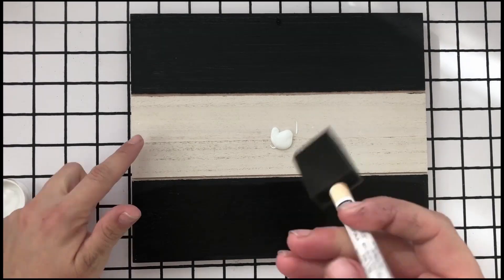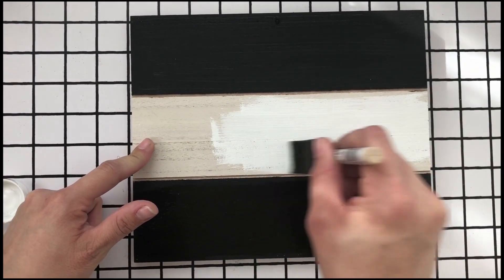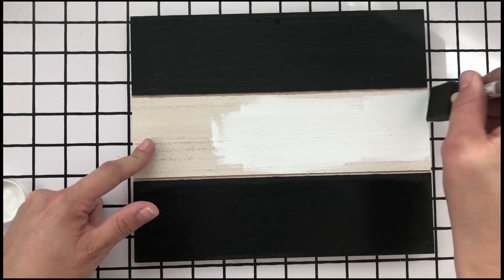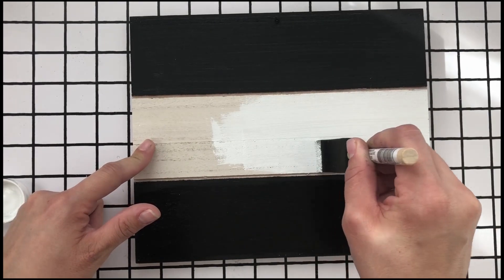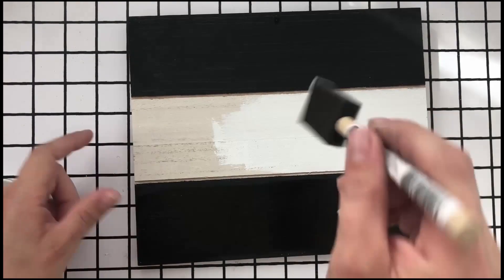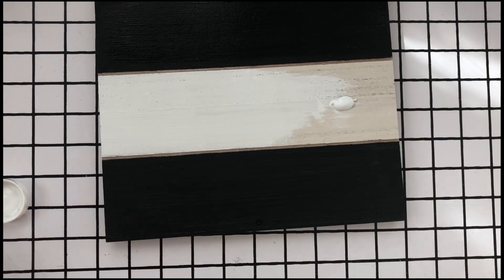Next I am painting the middle panel with Waverly white chalk paint. As you can see, Waverly chalk paint actually has great coverage and it's really inexpensive, so it's a pretty awesome brand for crafting.